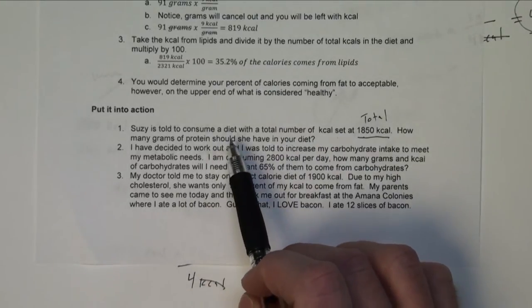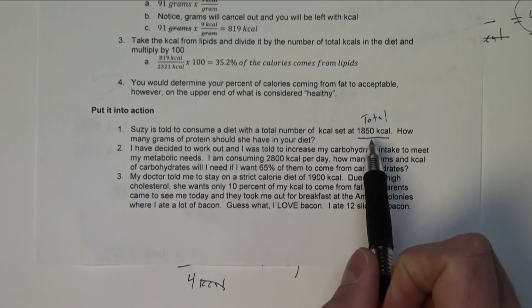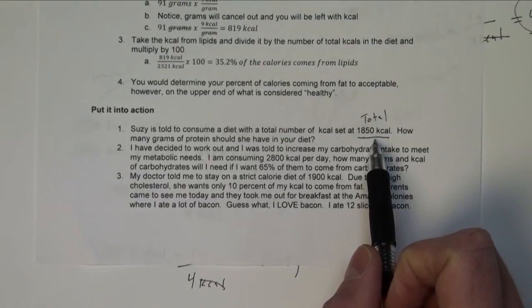We got Susie is told to consume a diet with the total number of kilocalories set at 1,850. So that's our total number that we need to be worried about.